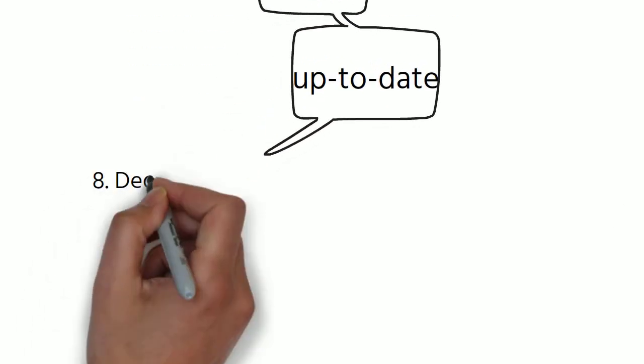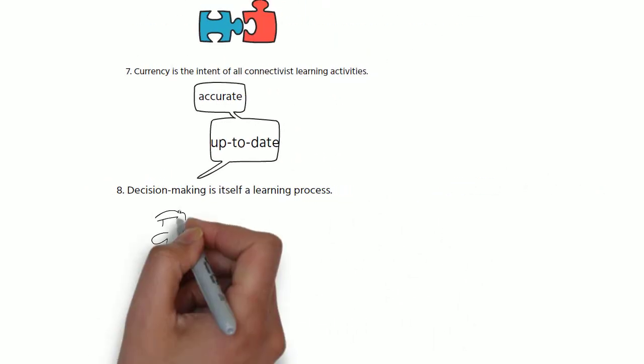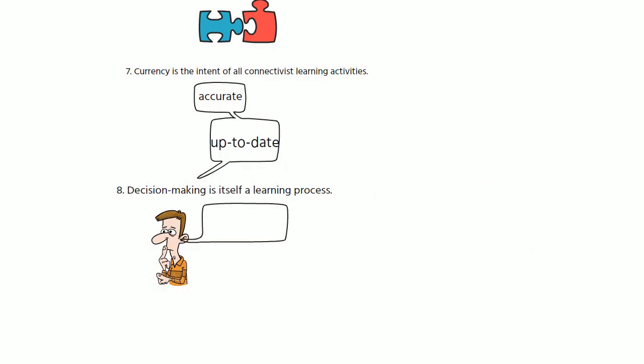Eighth, decision making is itself a learning process. Since the information ecology is constantly changing, it is very important to decide what to learn in order to stay current.